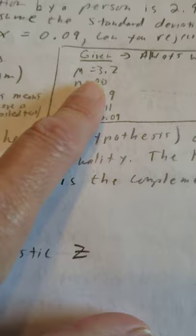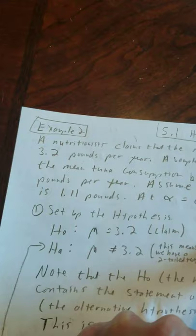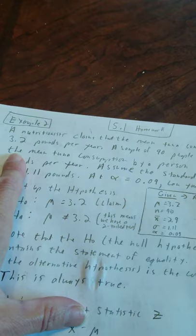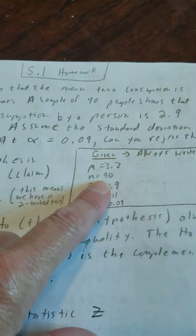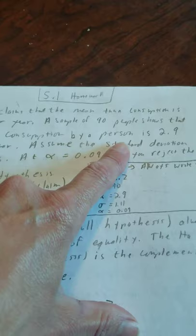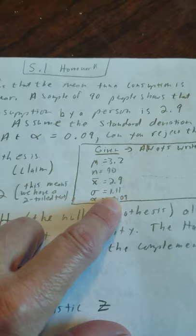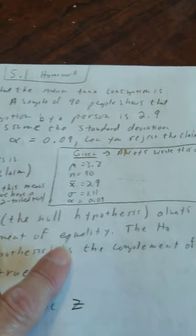At this point you want to look at all the information stated in those few sentences. What were we given? We were given mu equals 3.2. How do you know that? The very first sentence says the nutritionist claims that the mean tuna consumption is 3.2 pounds per year. A sample of 90 people, so that is the sample size is 90. That sample shows the mean consumption is 2.9, that's our x-bar because it comes from a sample. x-bar is 2.9. They also tell us that the standard deviation is 1.11 and the alpha is 0.09.